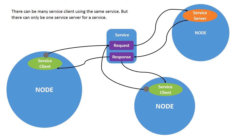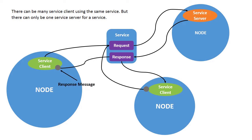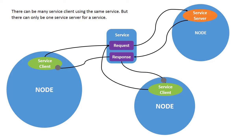An important point: there can be many service clients using the same service, but there can be only one service server for a service. We mostly use the service model when we have to do some quick work at a regular interval — for example, reading input, firing output, or play, pause, resume, and stop functions of the robot. That's it for this tutorial — if you liked this video, please give it a like, subscribe to our channel, and keep learning.